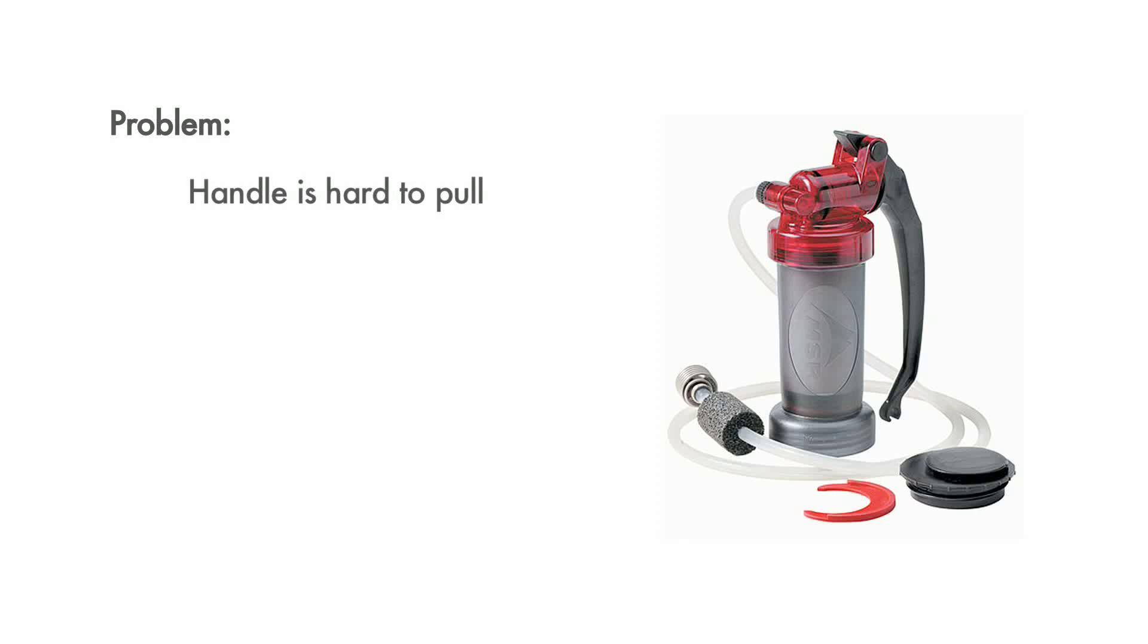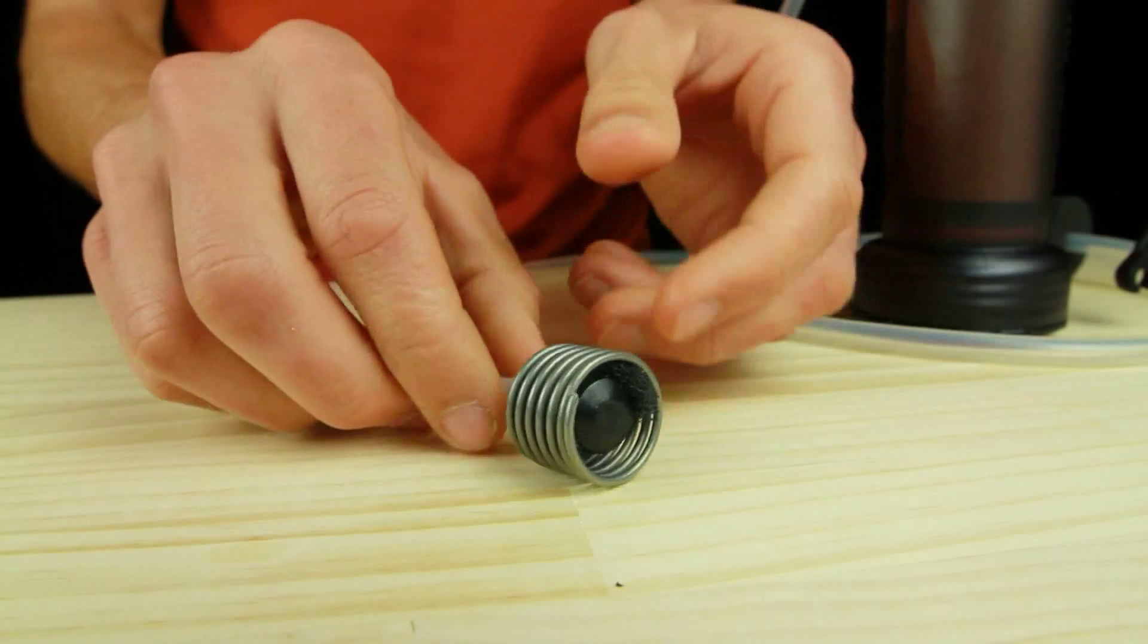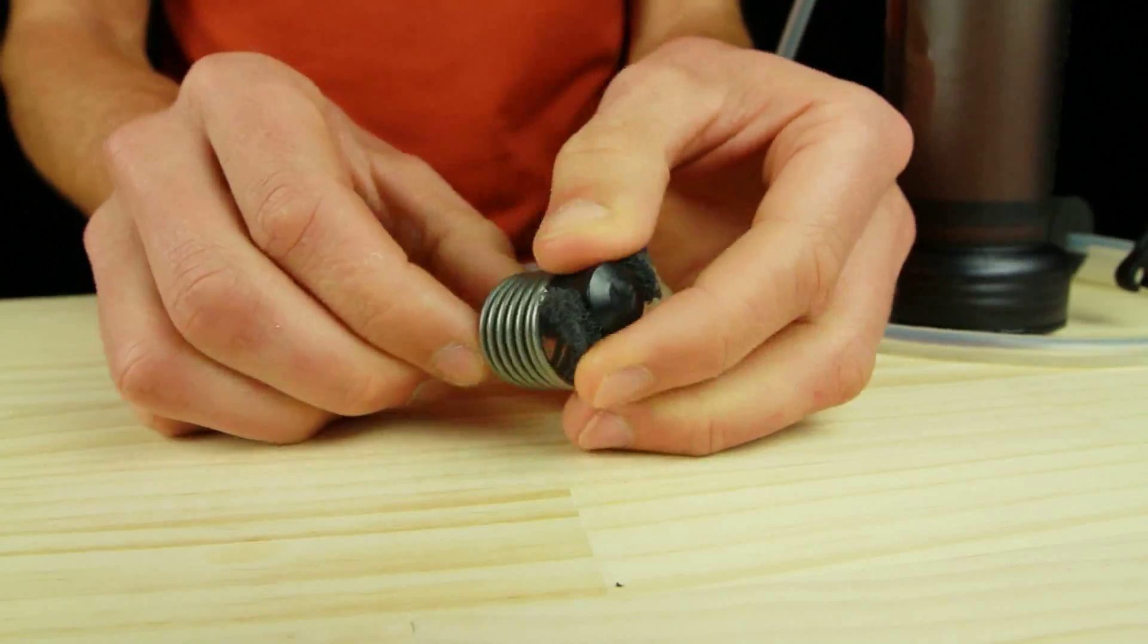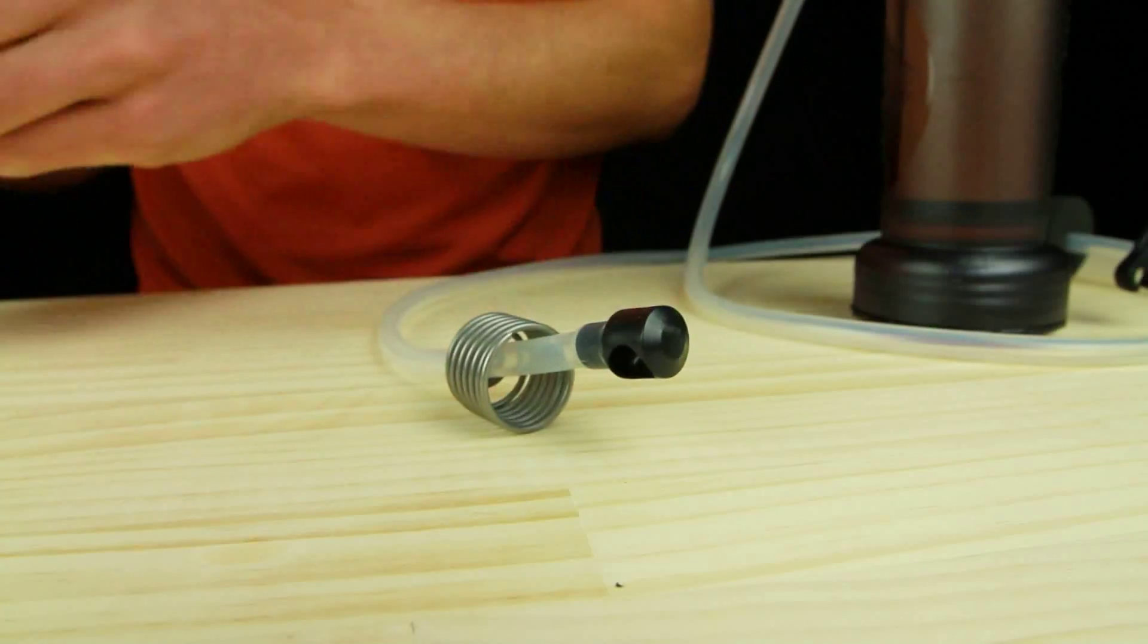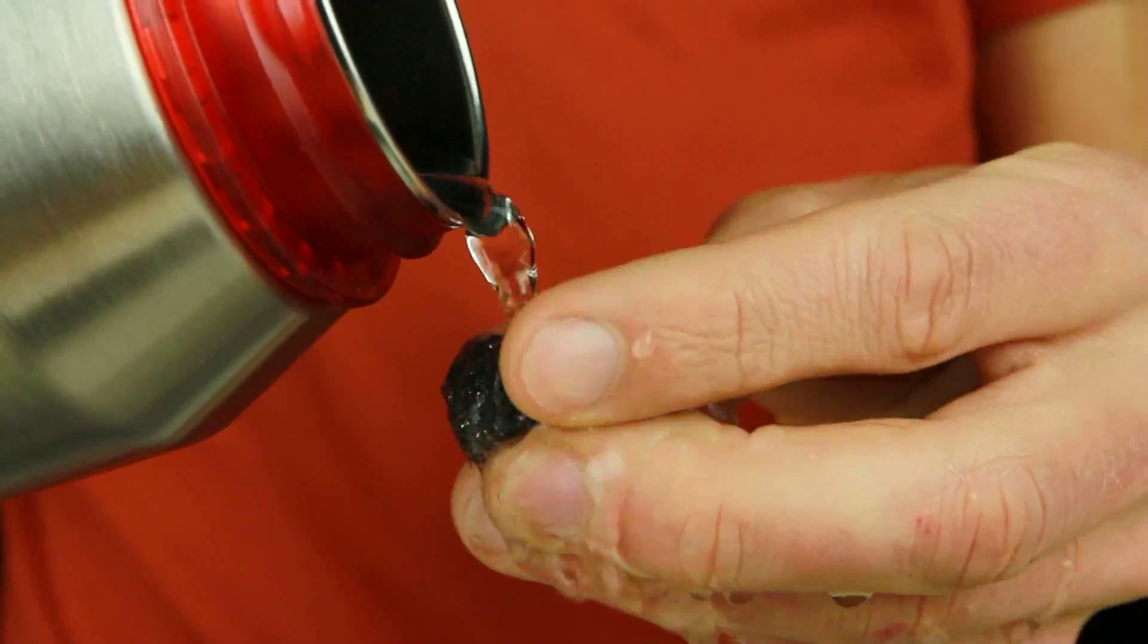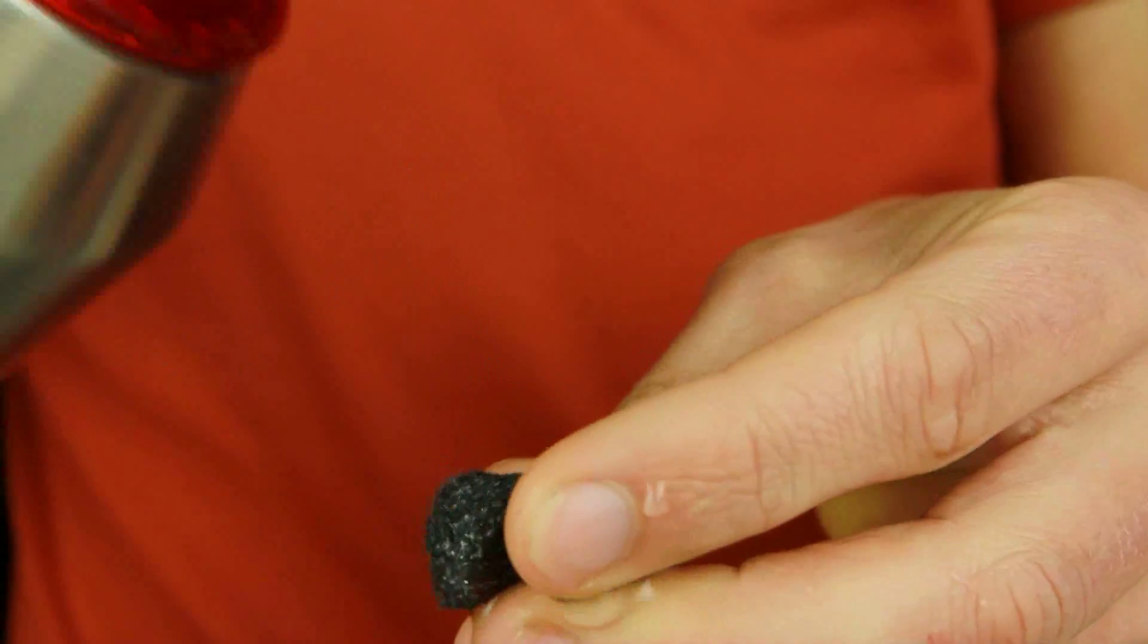If the pump handle is hard to pull, it could be caused by a kinked hose or a clogged inlet foam. Start by straightening the inlet hose to ensure that it's not kinked. To clean the inlet foam, slide the inlet cage up the hose and remove the foam from the side of the inlet funnel. Rinse the foam and reinstall it into the inlet funnel.